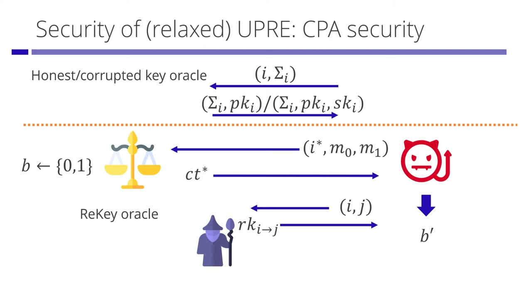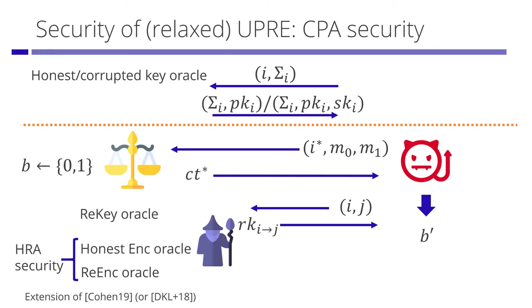In fact, we define a stronger security notion called security against honest re-encryption attacks. In this attack model, in addition to the re-encryption key oracle, the adversary also has access to an honest re-encryption oracle and re-encryption oracle. This is a natural extension of HRA security in PRE introduced by Cohen. However, it is a bit complex, so we omit it in this talk. Please see the paper for the details.